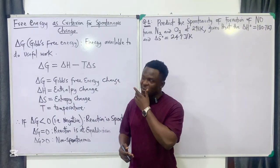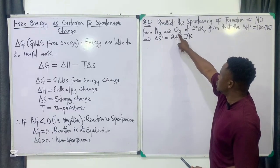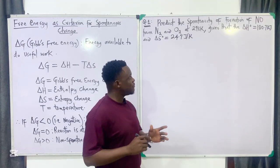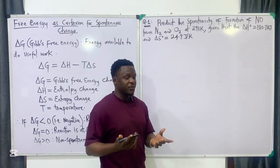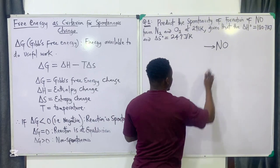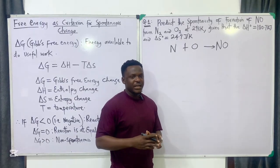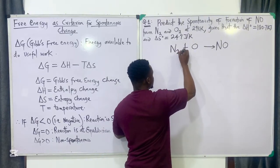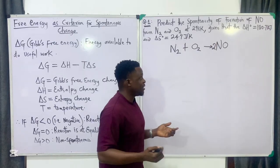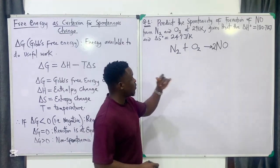A past exam question asks: predict the spontaneity of the formation of NO from N₂ and O₂. In exams you don't need to write out the full reaction, but for learning purposes: NO is the product, and the two elements that make it up are nitrogen and oxygen, which are diatomic and must exist as N₂ and O₂. Balancing gives the correct equation, but since we only need to predict spontaneity, we solve for ΔG.